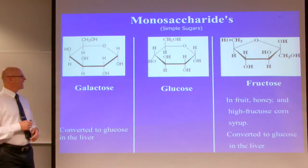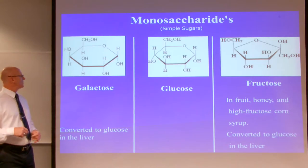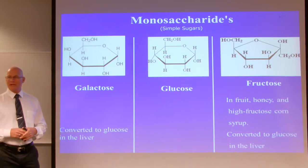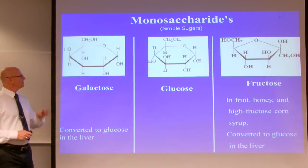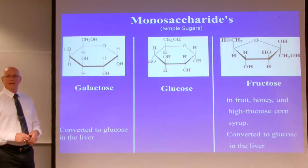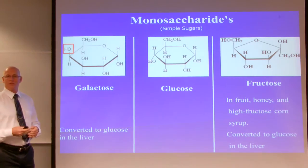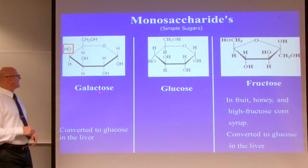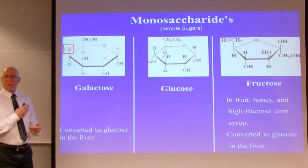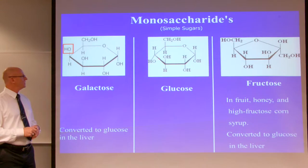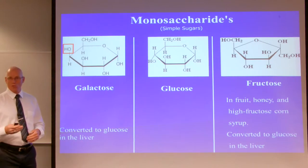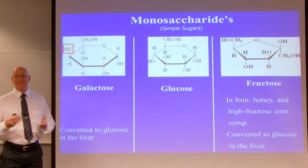The monosaccharides — galactose, glucose, and fructose — all have the same molecular formula: C6H12O6. The significant difference between galactose and glucose is the position of the hydroxyl group. On galactose, the hydroxyl on the fourth carbon points up; on glucose, the fourth carbon's hydroxyl points down. Fructose is a pentose — it has a five-membered ring — yet still has the same molecular formula. Galactose is converted to glucose in the liver, as is fructose. Fructose is found in fruit, honey, and high fructose corn syrup.